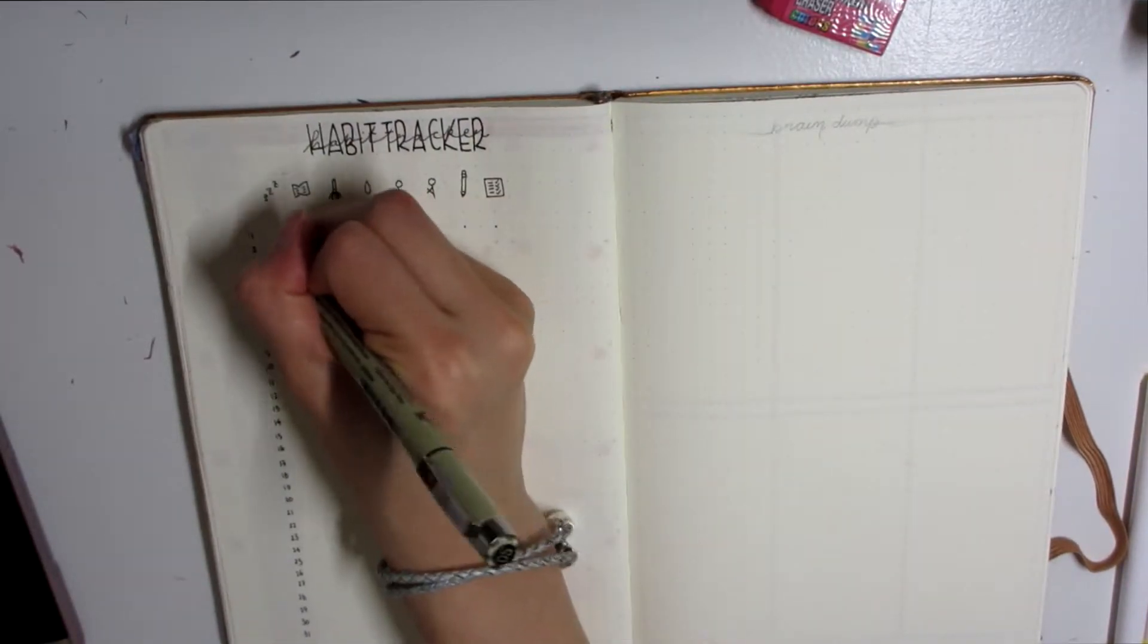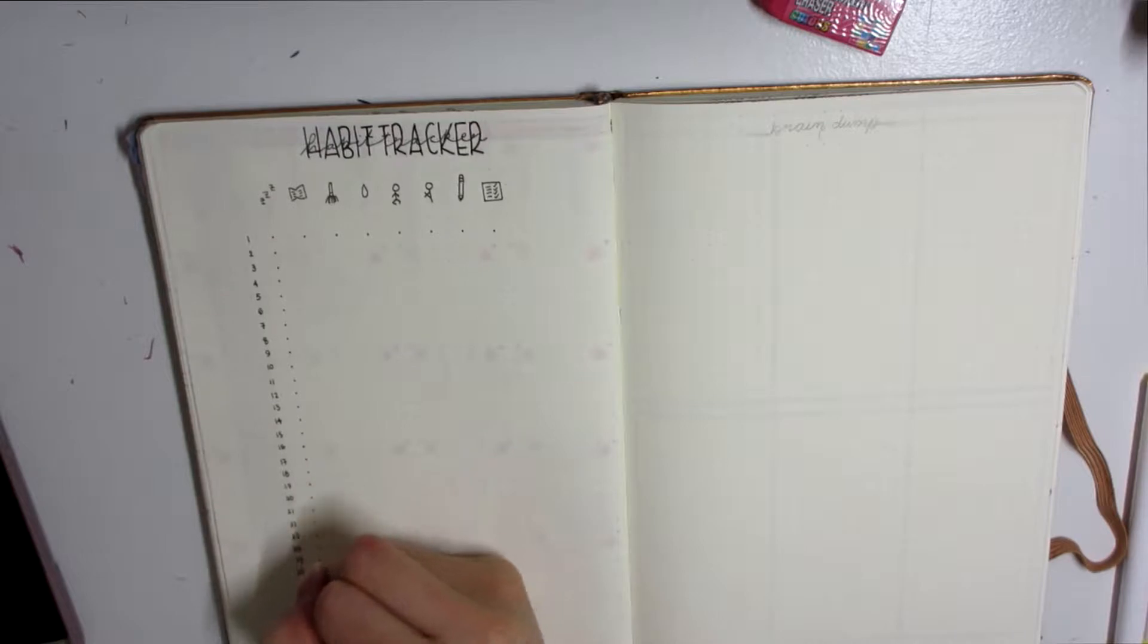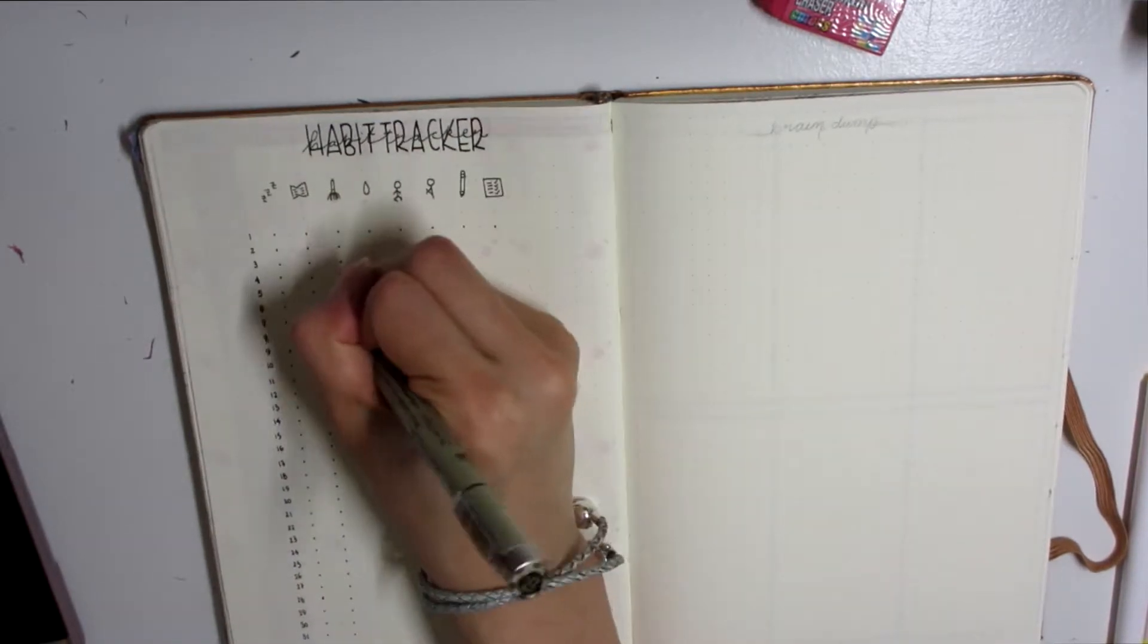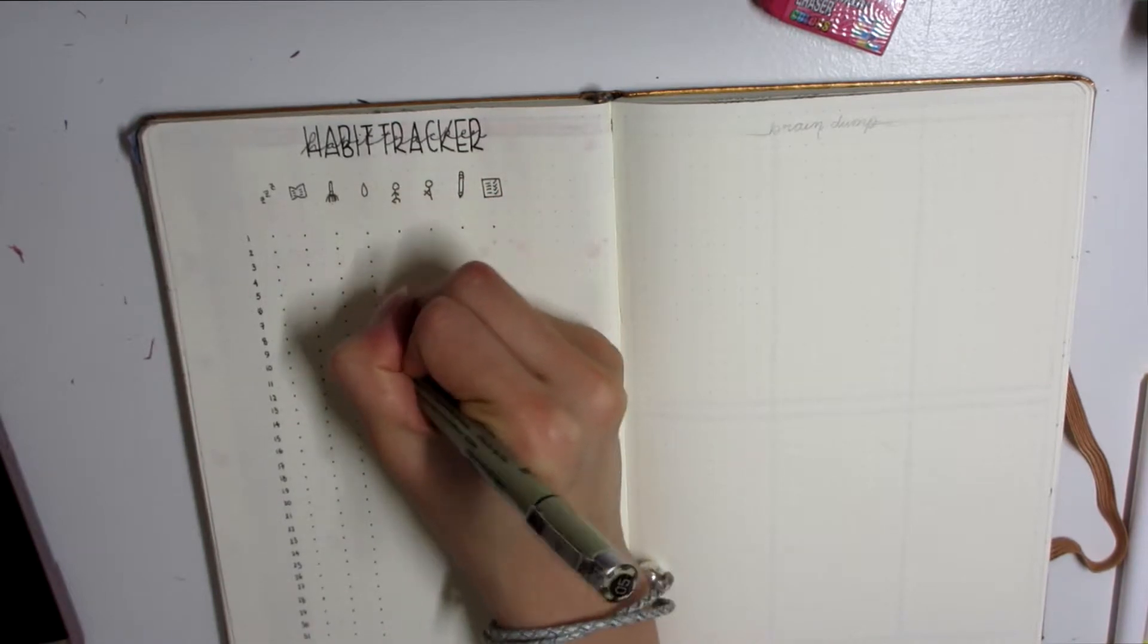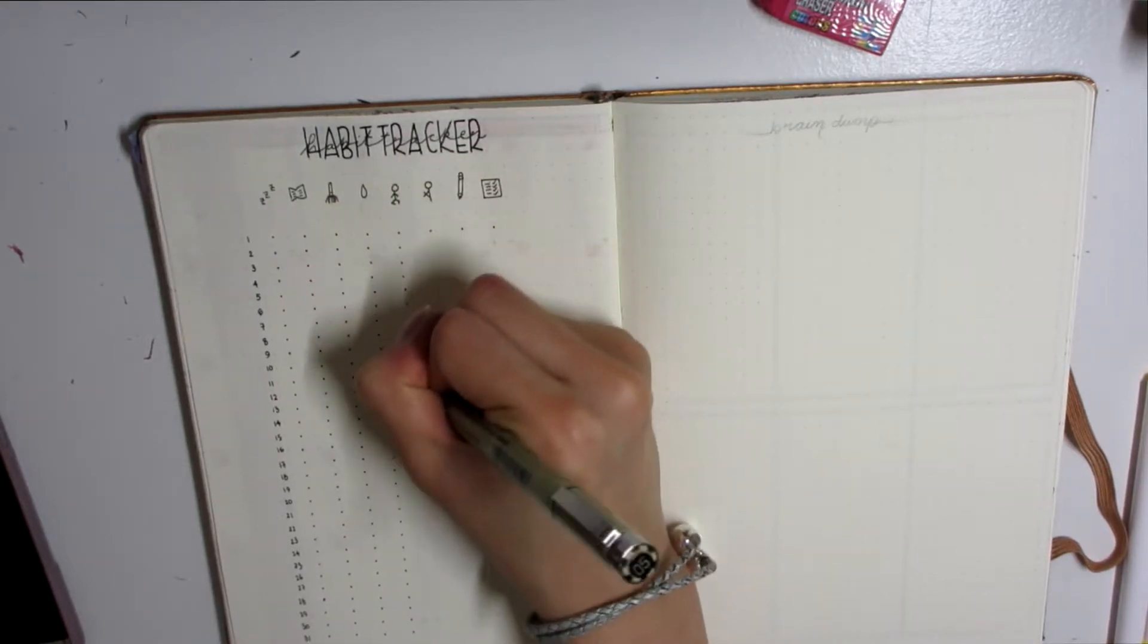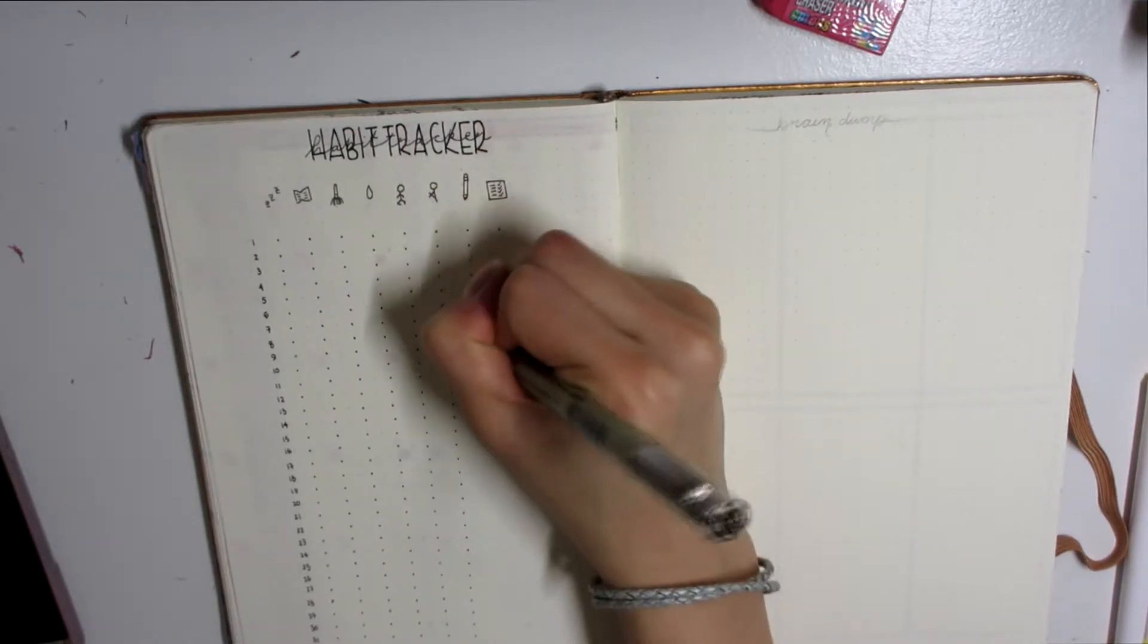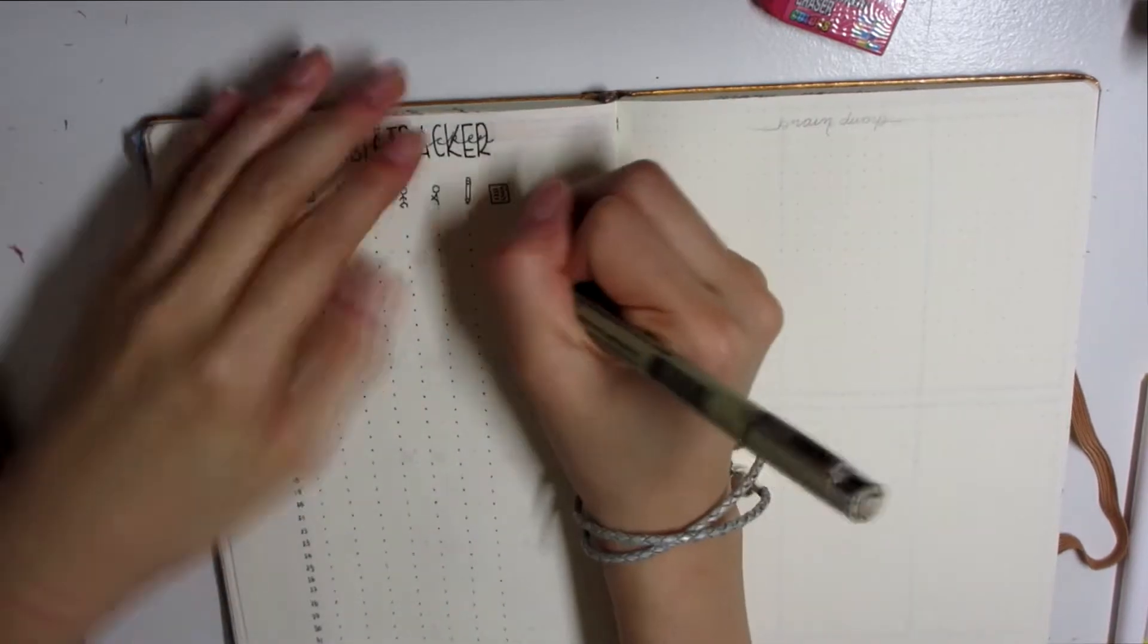I'm going to loosely dot everything. Every time you finish a habit for the day, you would darkly circle it in or make the dot darker to indicate that you completed the task or habit for the day. I thought this was a really minimal but clean and nice-looking habit tracker, so I wanted to try that out to test drive it and see if it looks cool, then I can incorporate it for future months.